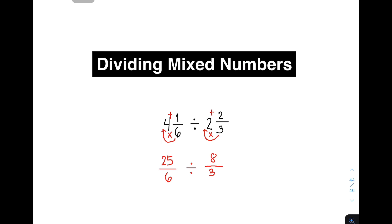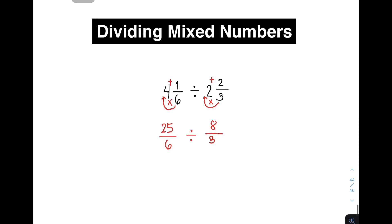Now, proceed na tayo sa pinaka-step talaga ng ating dividing mixed numbers. Alam niyo ba na yung dividing mixed numbers ay napupunta sa isang multiplication of fraction? So next step natin dito is to copy the first fraction or the first improper fraction. You have 25 over 6. And then you need to change this operation to multiplication.